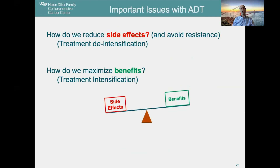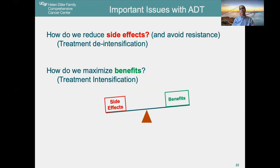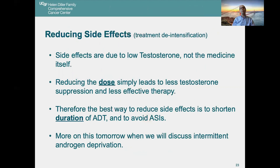So how do we reduce side effects and avoid resistance — what we call treatment de-intensification — and how do we maximize benefits, which we call treatment intensification? The side effects we see are due to the low testosterone level, not the medicine itself. Reducing the dose leads to less testosterone suppression and could reduce side effects, but also reduces efficacy. Thus the best way to reduce side effects is to shorten the duration of ADT and avoid ASIs, since they intensify side effects. We'll discuss intermittent androgen deprivation therapy as a de-intensification strategy tomorrow.